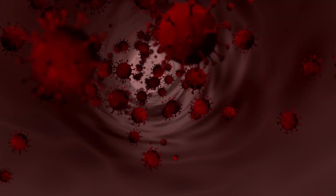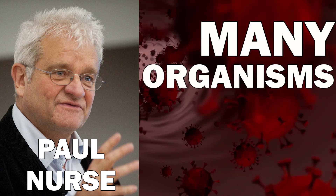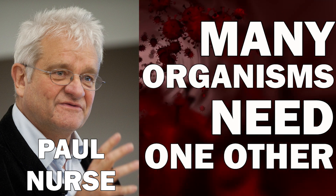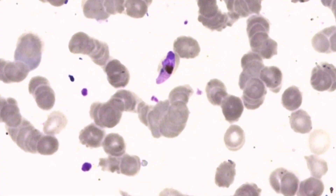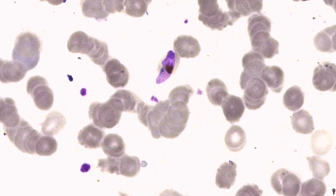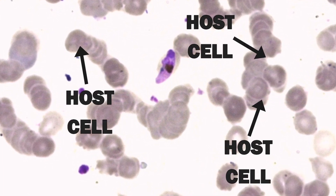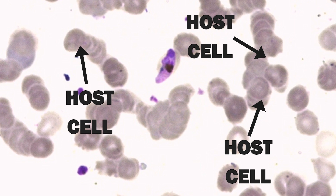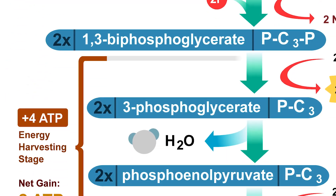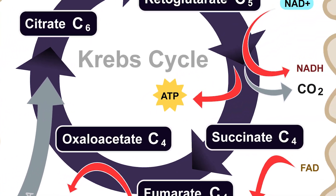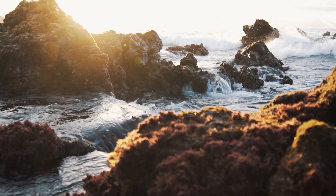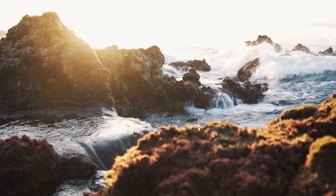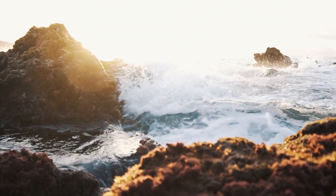But viruses cannot maintain themselves and need a host. This is the reason why they are often not considered as being alive. However, Nobel Prize winner Paul Nurse points out that many forms of life depend on other organisms. For example, plasmodium, which is the main cause of malaria, is considered to be alive, yet this parasite cannot survive without its host cell — without a host, it would not have all the biochemical reactions necessary to survive. The more we look at our surroundings, the more exceptions to the characteristics of life we find.